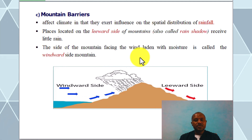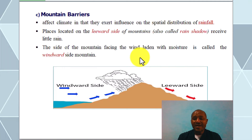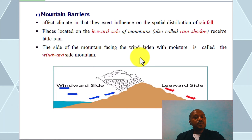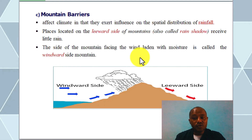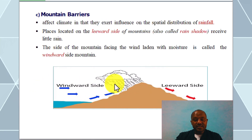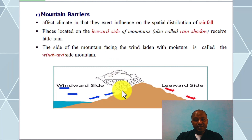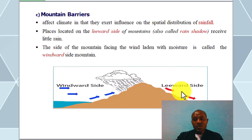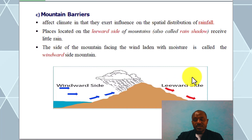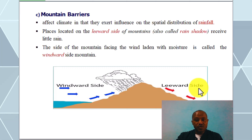The mountain barrier affects the climate and has an exact influence on the spatial distribution of rainfall. Places located on the leeward side of the mountains, also called the rain shadow, receive little rain. If you go out and aim for the windward side, the wind will bring rainfall. The wind will get the elevation of the mountain — the rain shadow.